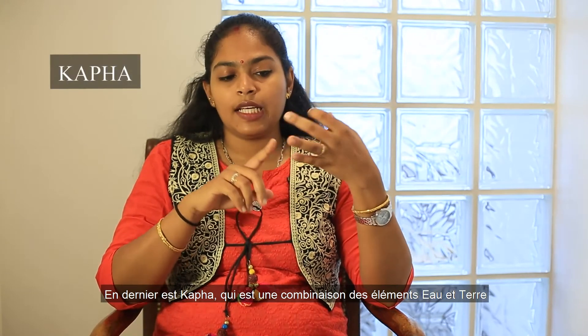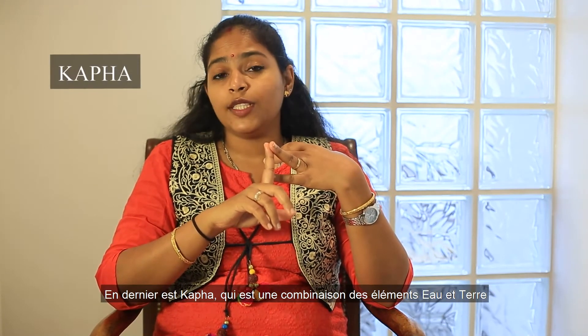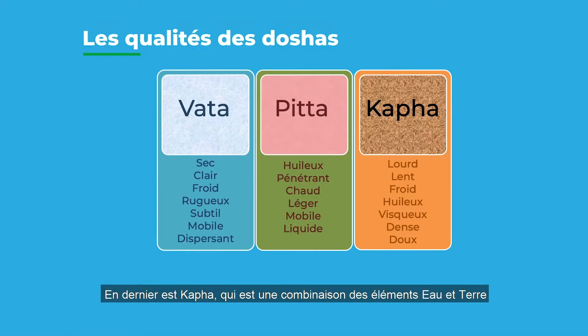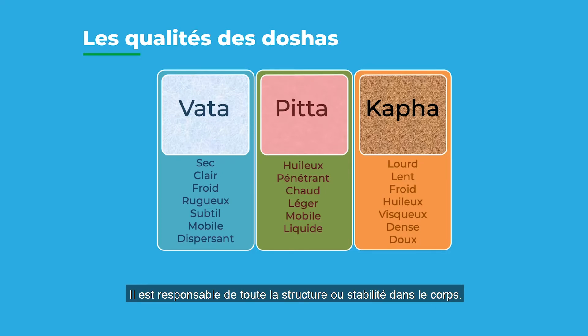Lastly, there is Kapha — a combination of water and earth element. It is responsible for all the structure and stability in the body, and also the lubrication and nourishing factors in the body.